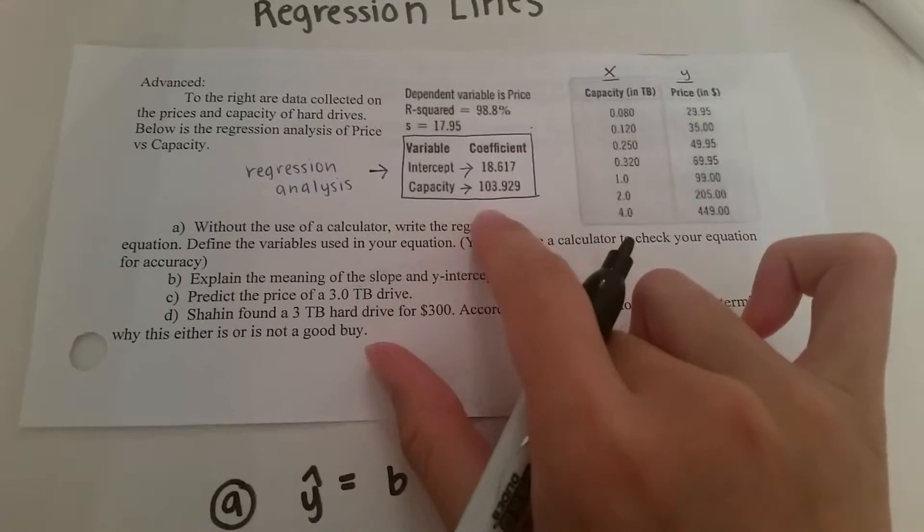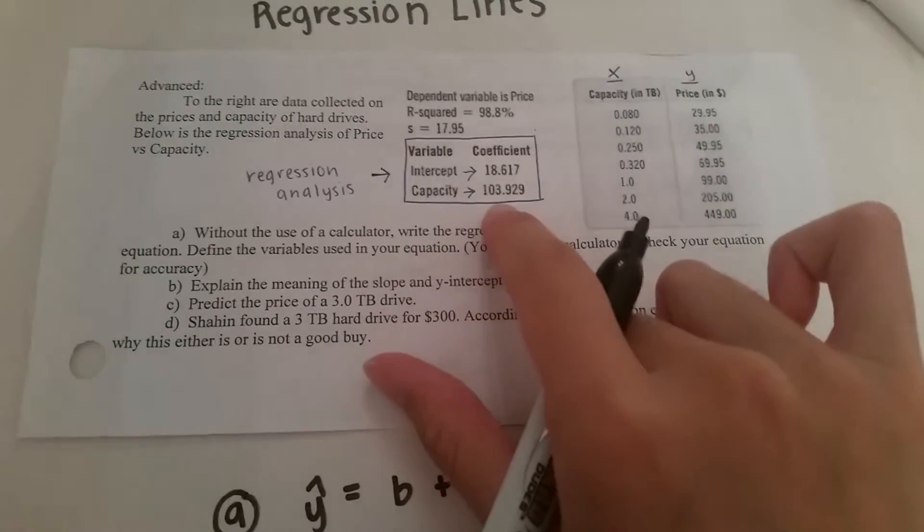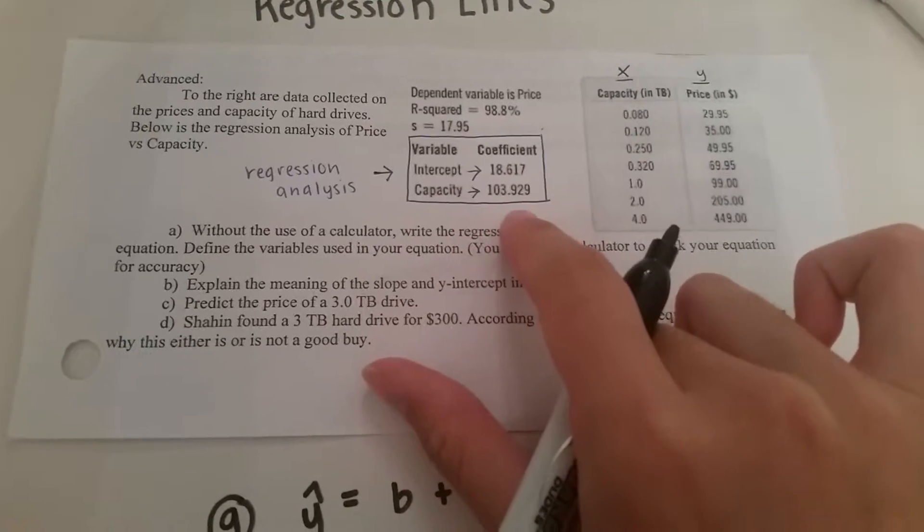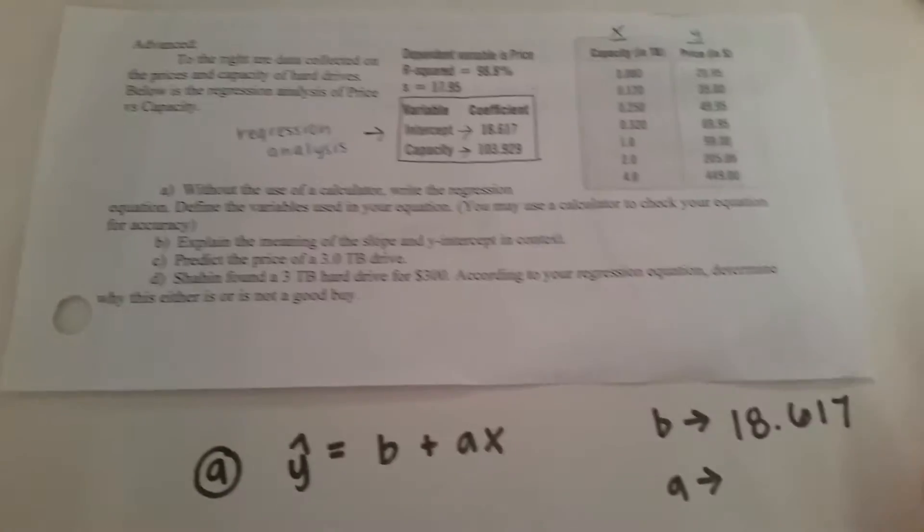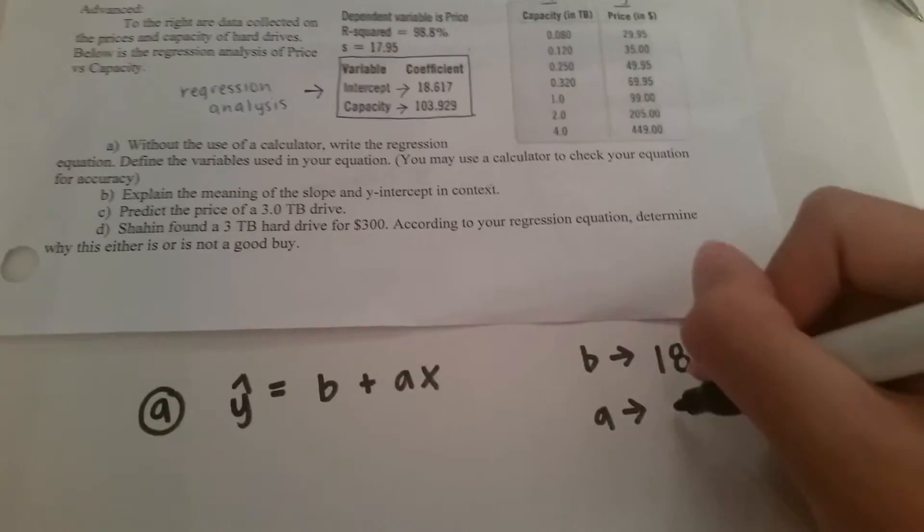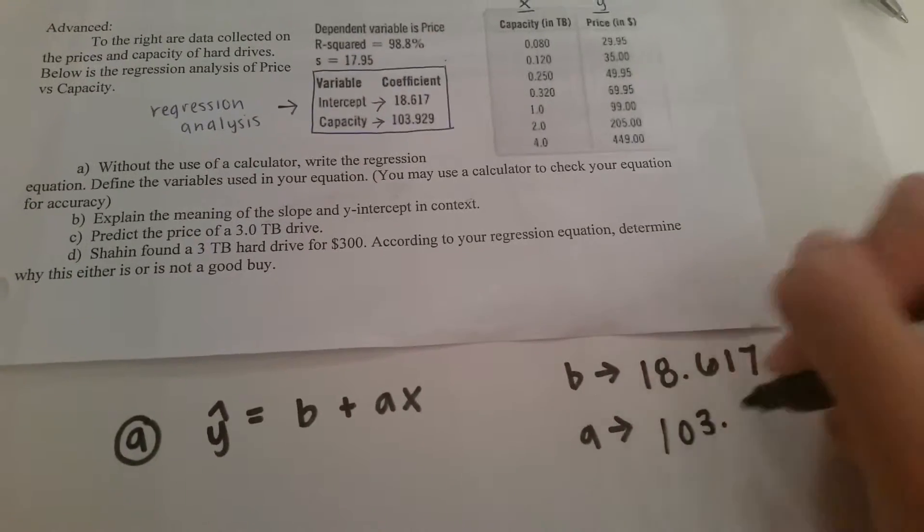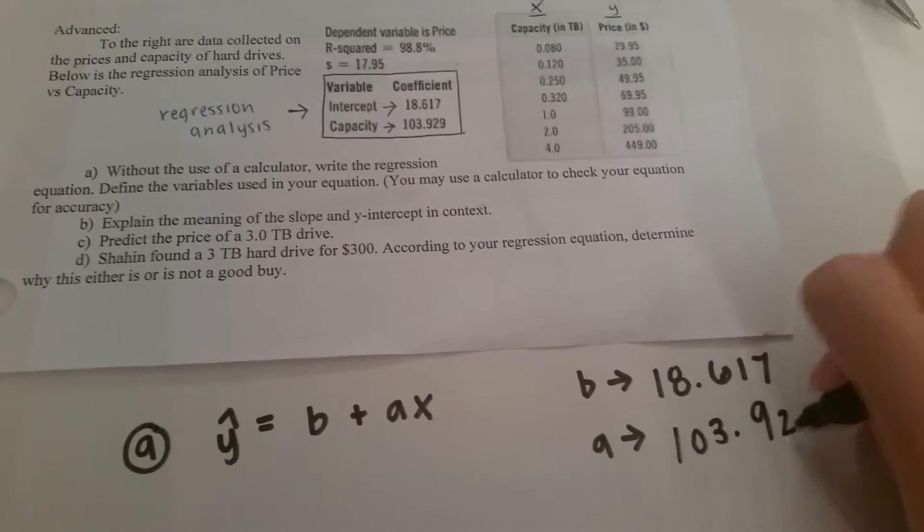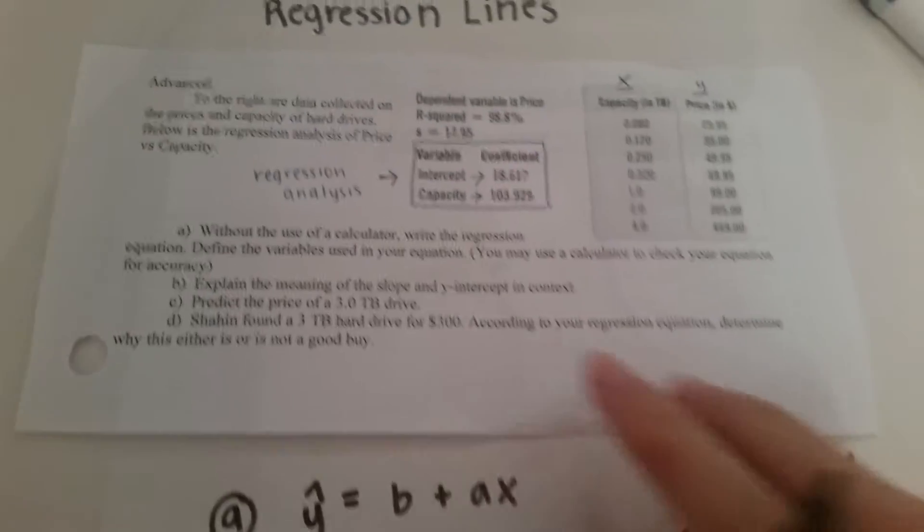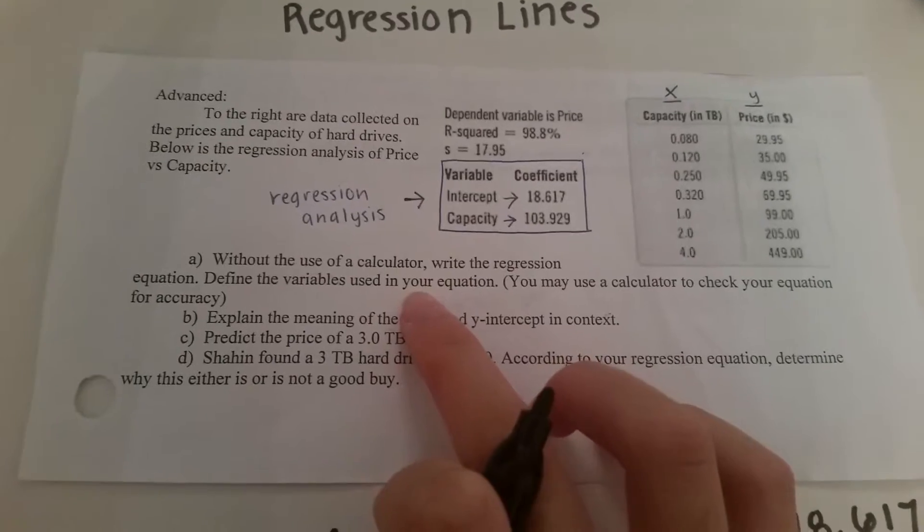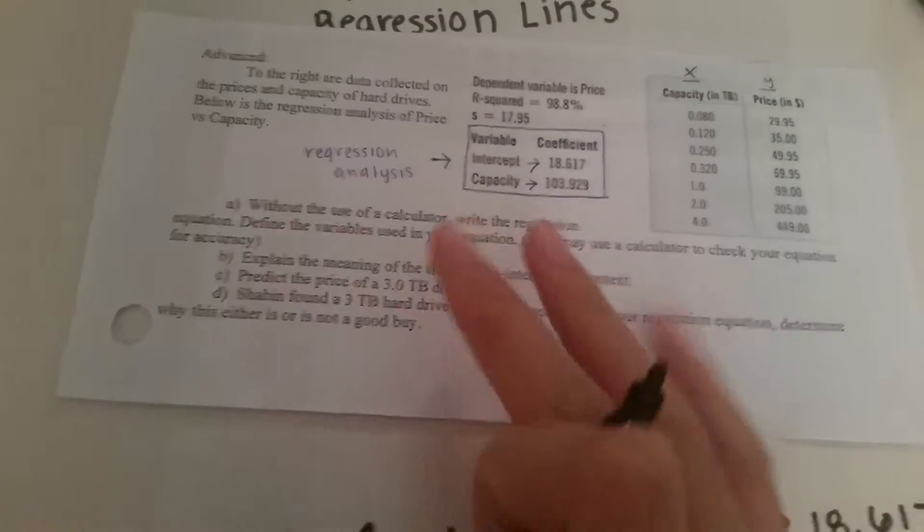The capacity coefficient is stated as 103.929 which can be assumed to be the slope. Now it asks to define the variables used in the equation.